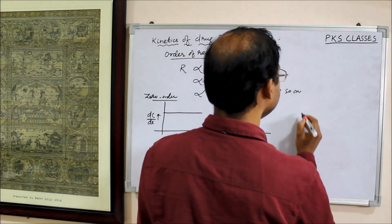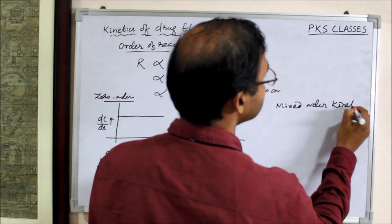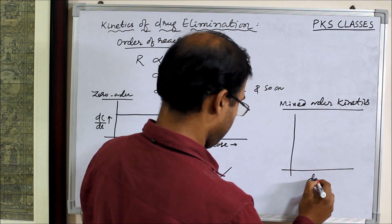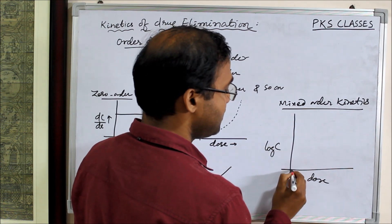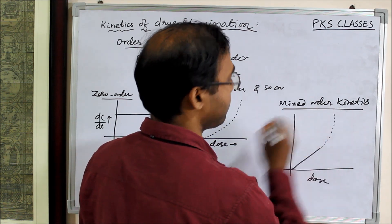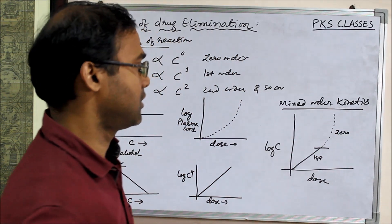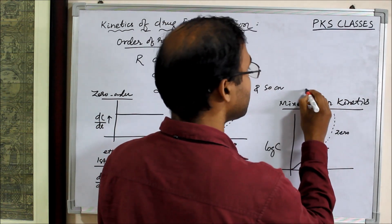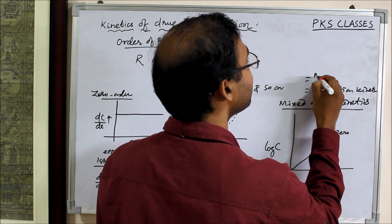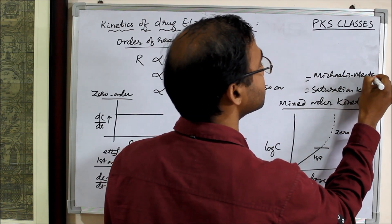There are certain drugs which show mixed order kinetics. Initially it will be first order, and after a certain point it becomes zero order. Mixed order kinetics is also known as saturation kinetics or Michaelis-Menten kinetics.